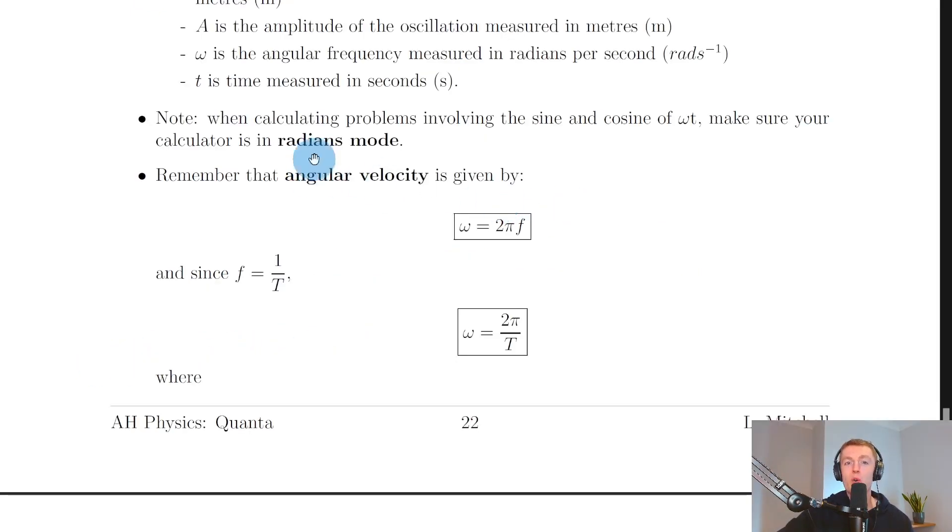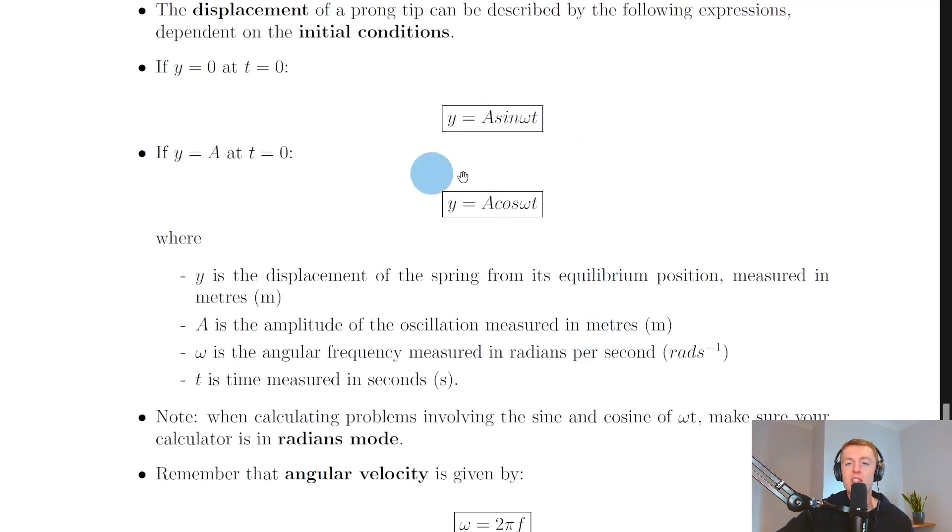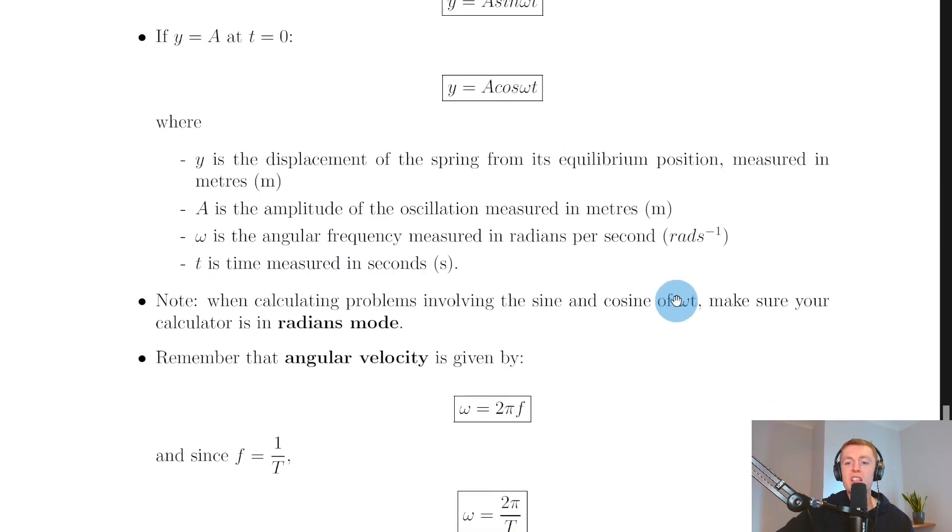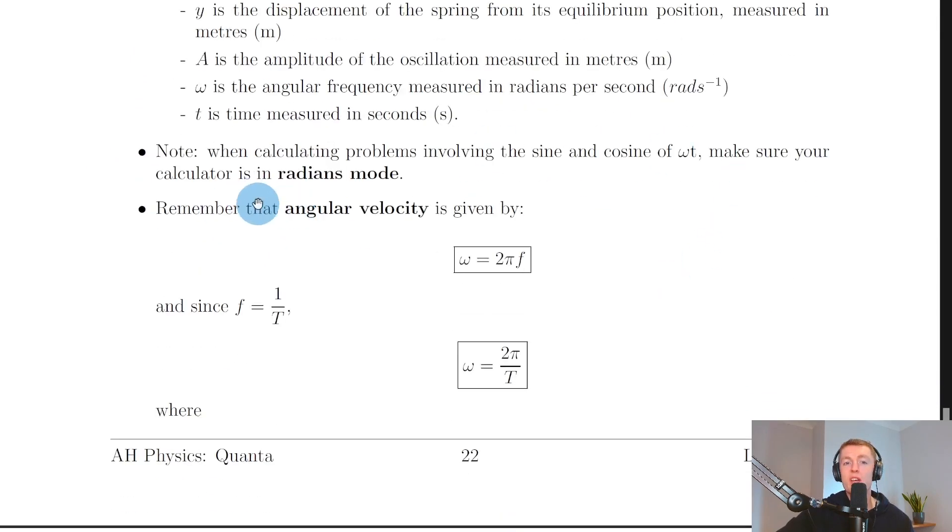An important point to note is that when calculating problems involving the sine and cosine of omega t, i.e. when using these displacement expressions, you need to make sure that your calculator is in radians mode. If you don't, your calculator will be in degrees mode, and you'll get the wrong answer.